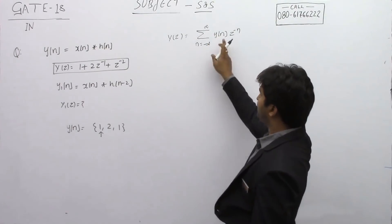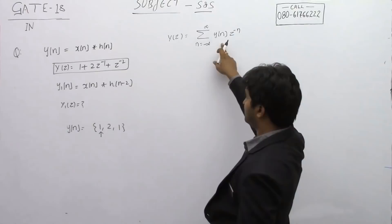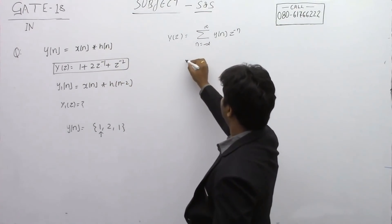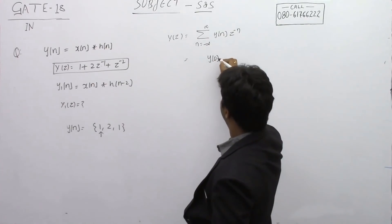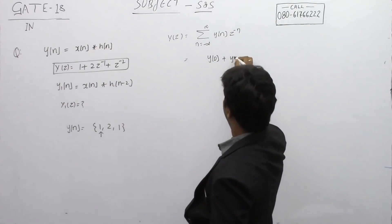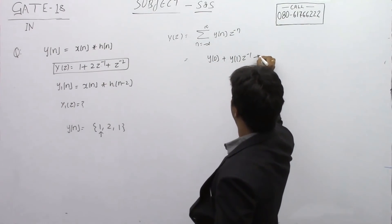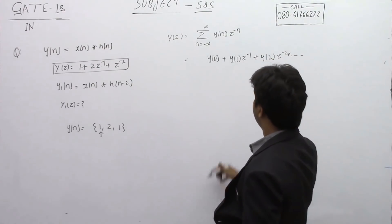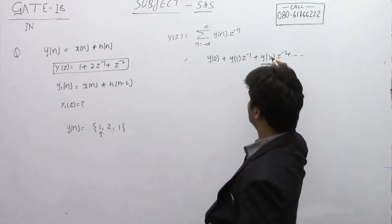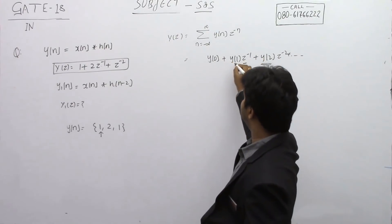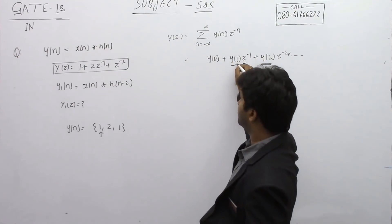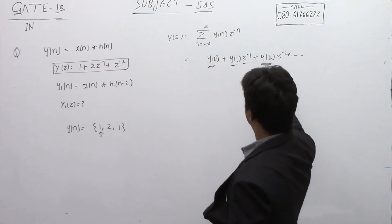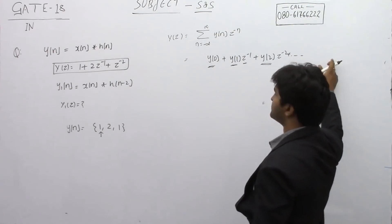Comparing with the coefficients of z, you get: y(0) plus y(1)·z⁻¹ plus y(2)·z⁻² and so on. So z⁻²'s coefficient is y(2), z⁻¹'s coefficient is y(1), and z⁰'s coefficient is y(0). Only these values are going to be non-zero.